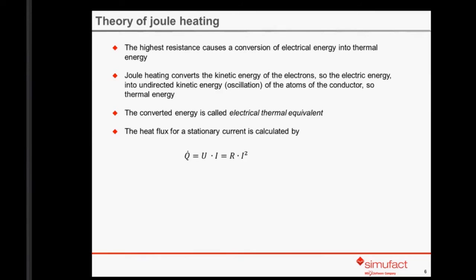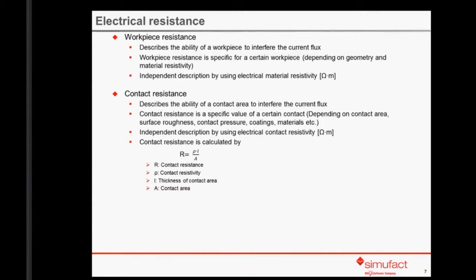For a stationary electrical current, the heat flux is calculated by the resistance times electrical current squared. The first type of resistance is the workpiece resistance — it describes the ability of a workpiece to interfere with the electrical current flux, and depends on geometry and material resistivity. The independent description uses electrical material resistivity. The second type is the contact resistance, which depends on contact area, surface roughness, contact pressure, coatings and materials. The independent description uses electrical contact resistivity.